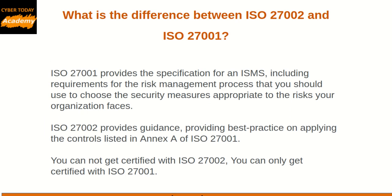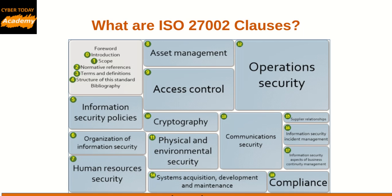Now let's look at the difference between ISO 27002 and ISO 27001. ISO 27001 provides the specification for an ISMS, including requirements for the risk management process that you should use to choose the security measures appropriate to the risks your organization faces. ISO 27002 provides guidance, offering best practice on applying the controls listed in Annex A of ISO 27001. Like ISO 27001, ISO 27002 contains 19 clauses — 5 introductory and 14 main clauses.